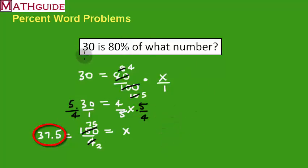So there you go. 30 is 80% of what number? Well, 30 is 80% of 37.5. There you have it. We just saw three examples that deal with percent word problems. Make sure you go back to mathguide.com. Check out our other interactive quizzes, instructional videos, and text-based lessons. Take care.